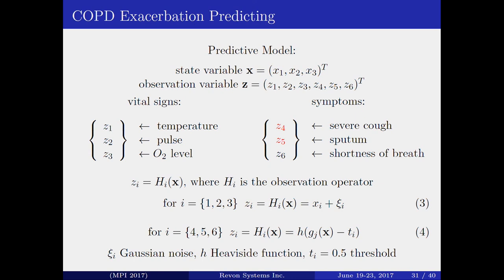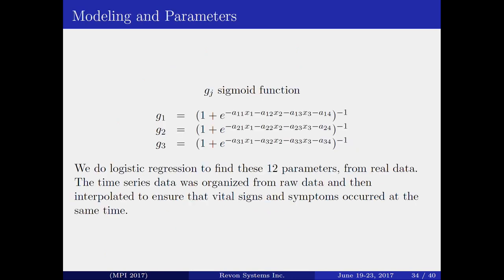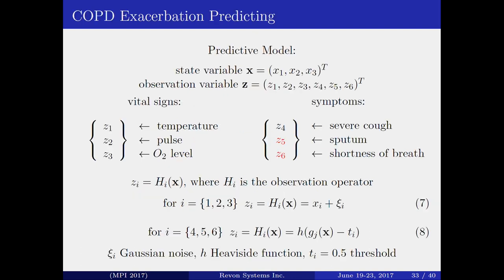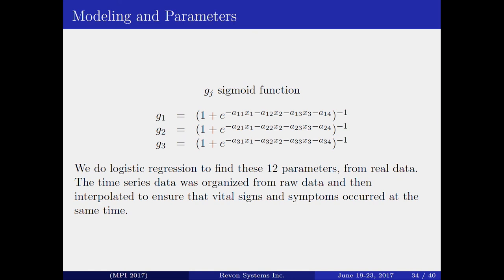Our hypothesized functional relationship is that symptoms are based on vital signs in a sigmoidal relationship. A sigmoid has a threshold and a sensitivity encoded in its width. Since symptom variables are binary (zero or one), we project onto a probability space using sigmoid functions for each symptom, then apply a Heaviside function with threshold 0.5 — rounding up or down. To find the sigmoid parameters, we worked from real data. Raw data that was not organized into a comprehensible form was first organized. Since vital signs and symptoms were not necessarily updated at the same time, interpolation was done to align their timestamps.